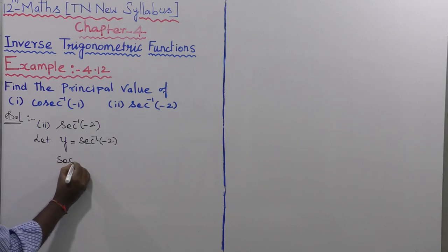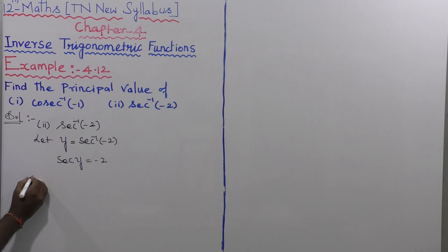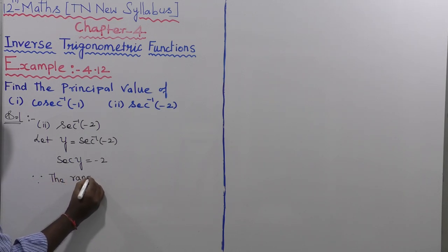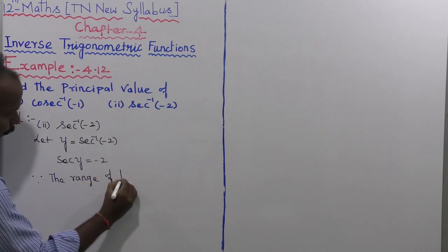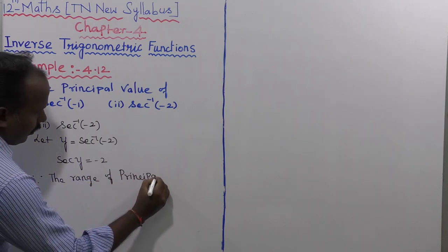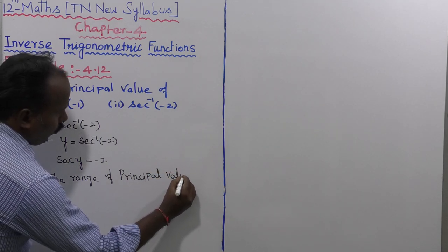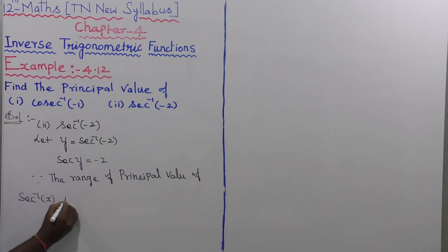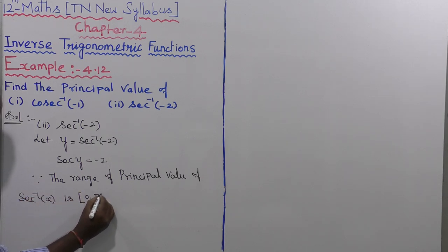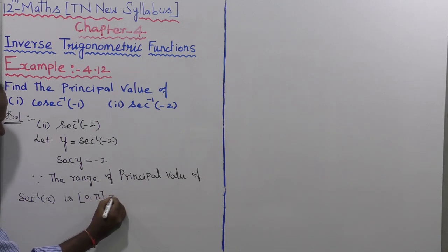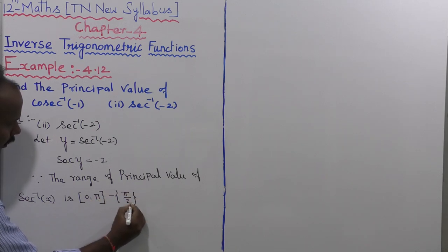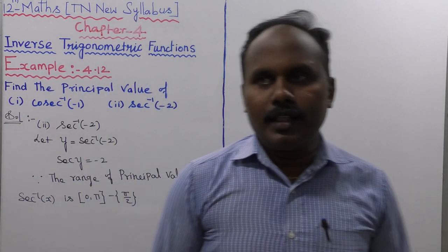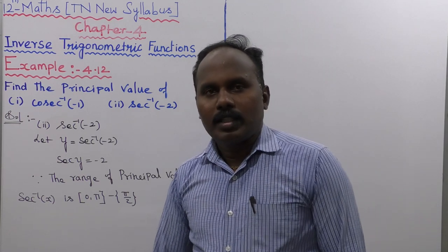From this, sec y equal to minus 2. Since the principal value range of sec inverse of x is the closed interval 0 to pi, except the value of pi by 2.